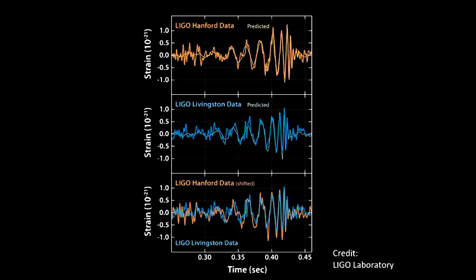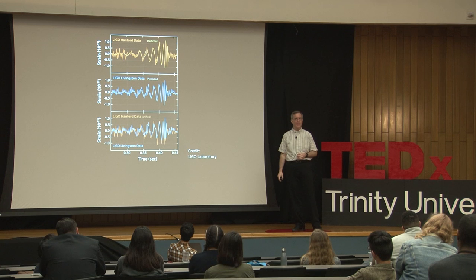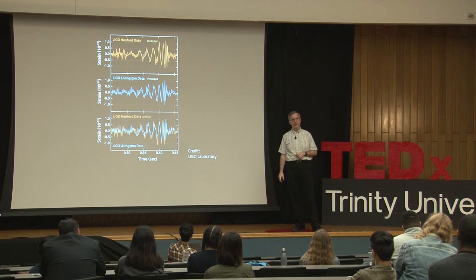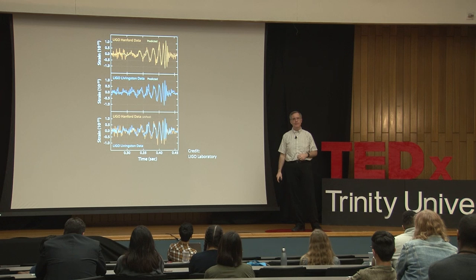Whoop! It's a very innocuous looking graph. But what you are looking at are two black holes — 29 and 36 times the mass of our sun — in the last few tenths of a second of life, before they collide with each other, 1.3 billion light years away from Earth. It is the most violent event ever detected. While this collision occurred, it gave off 50 times more energy than all the rest of the observable universe combined.